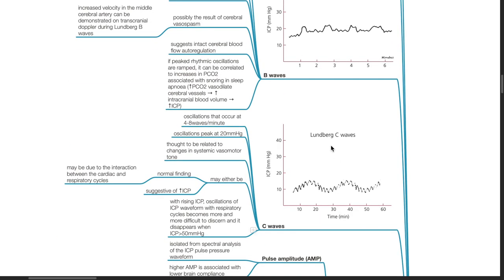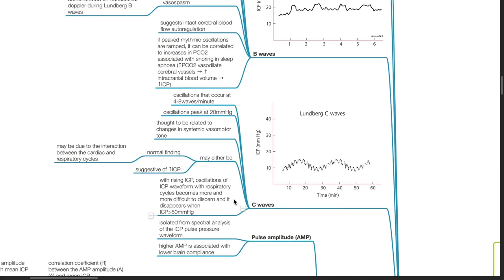Lundberg C waves. Oscillations that occur at 4 to 8 waves per minute. Oscillations peak at 20 mmHg. It is thought to be related to changes in systemic vasomotor tone. It may either be a normal finding where ICP interacts between cardiac and respiratory cycles or suggestive of increased ICP. With rising ICP, oscillations of the ICP waveform with respiratory cycles become more and more difficult to discern and disappear when ICP is more than 50 mmHg.